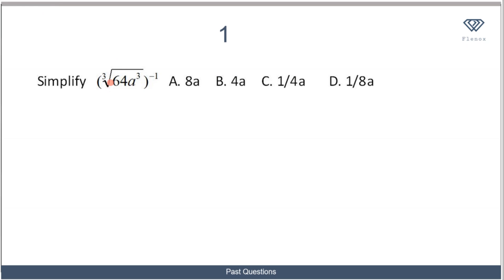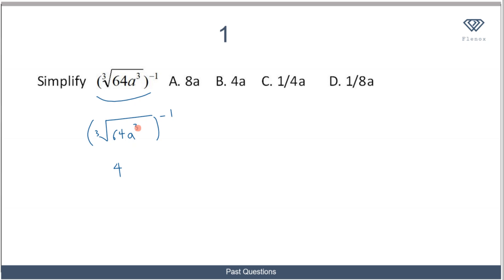This first question asks us to simplify this expression. We need to find the cube root of 64a³ to the power of minus one. The cube root means one number that multiplies three times to give that number. The cube root of 64 is 4, because 4 times 4 times 4 gives 64. And the cube root of a cubed is a, because a times a times a gives a cubed.